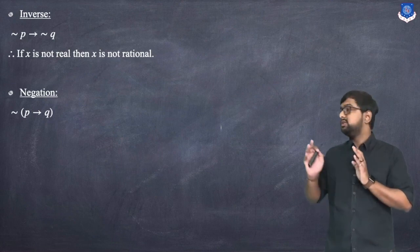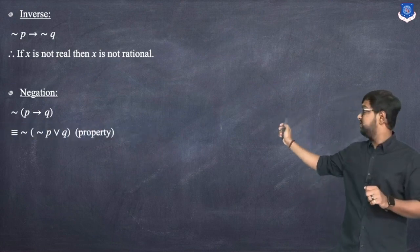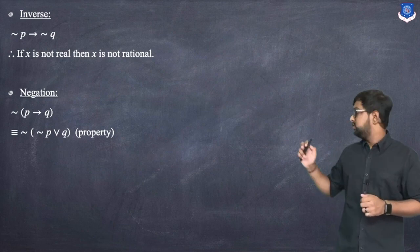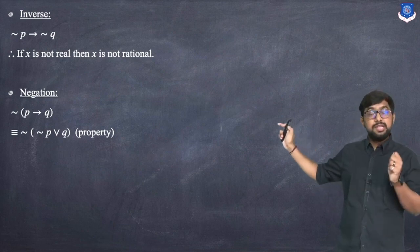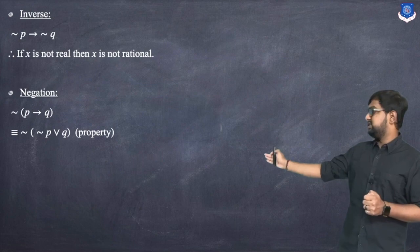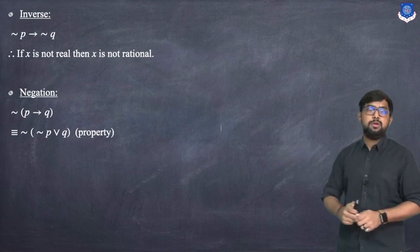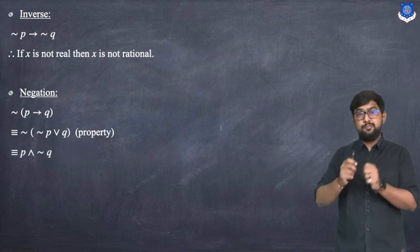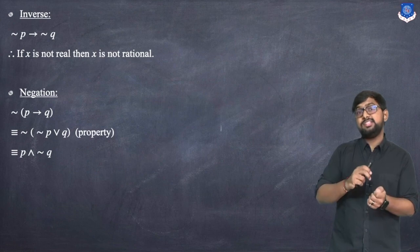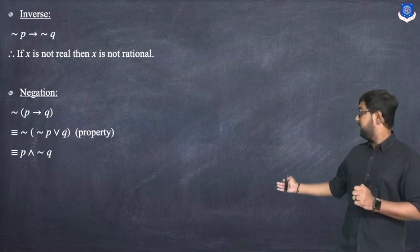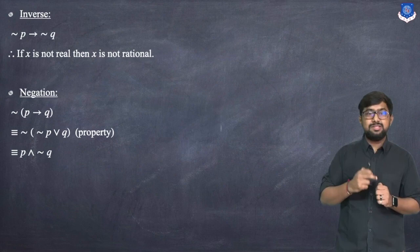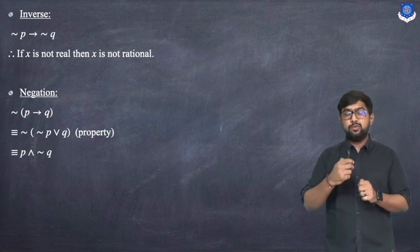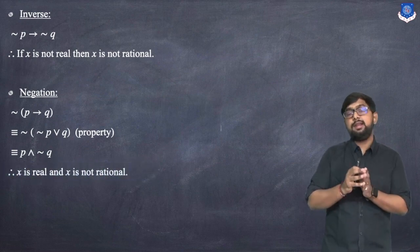The negation of P → Q: since P → Q is equivalent to ¬P ∨ Q, its negation is ¬(¬P ∨ Q) = P ∧ ¬Q. In statement form: 'X is real and X is not rational.'